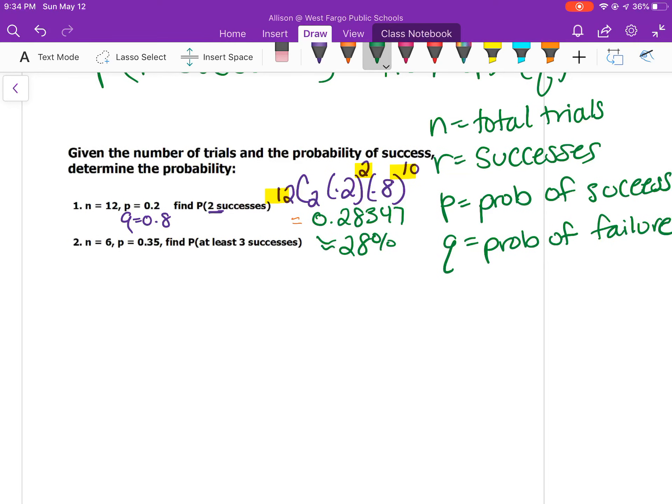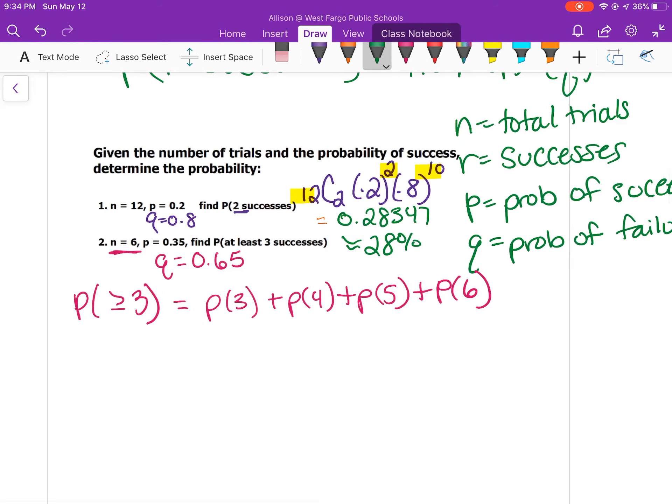Now if you need at least three successes, that's the probability of at least three, greater than or equal to three. You could find that by taking the probability of three plus the probability of four plus five plus six. Here my probability of success is 0.35, so my probability of failure will be 0.65. Those two always add up to one or 100%. This one requires a little bit more work.